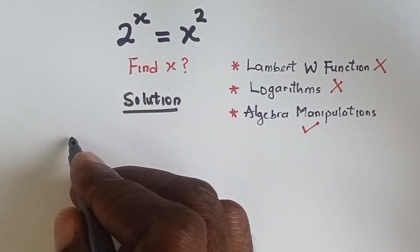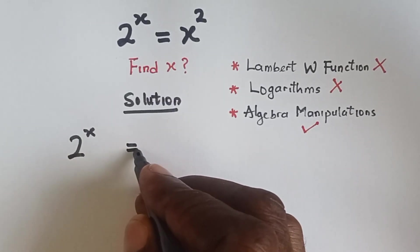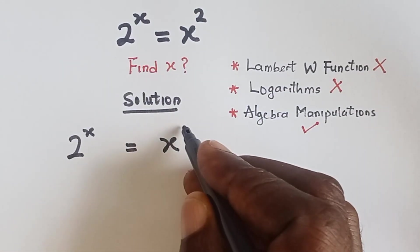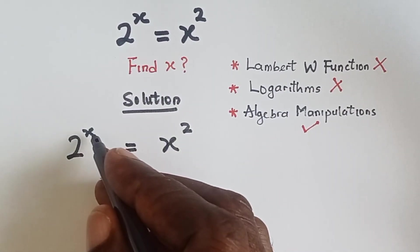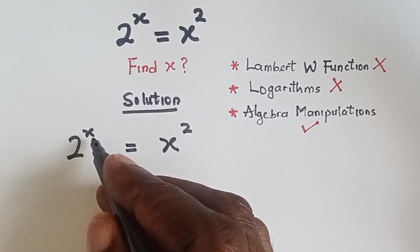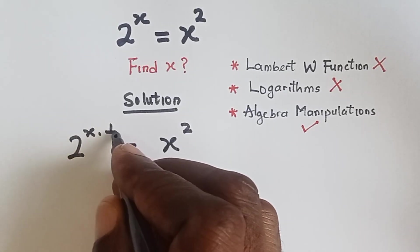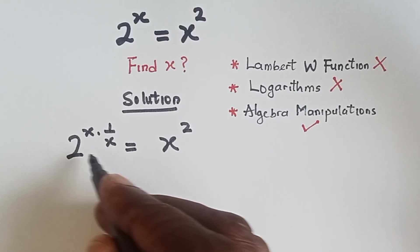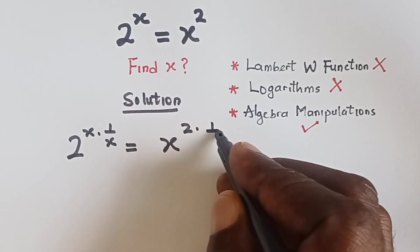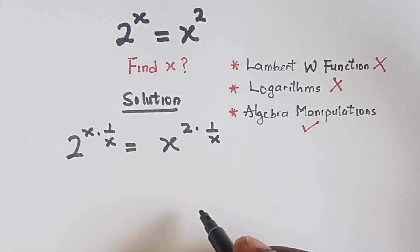So we have 2 raised to the power x equals to x raised to the power 2. How do we cancel out this x, this power x? We multiply this by 1 over x and whatever we do here, we have to do here too. So we also multiply this by 1 over x.